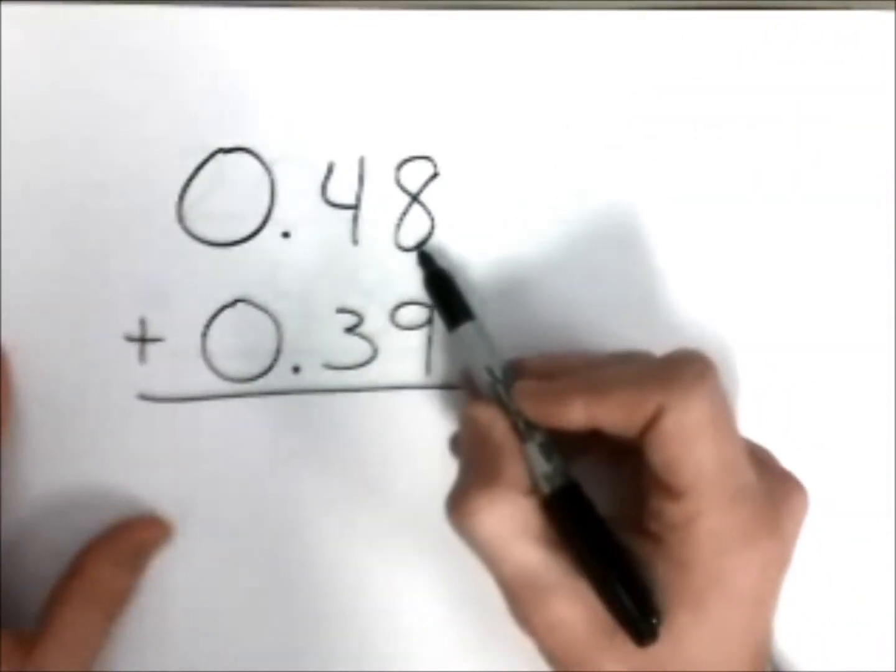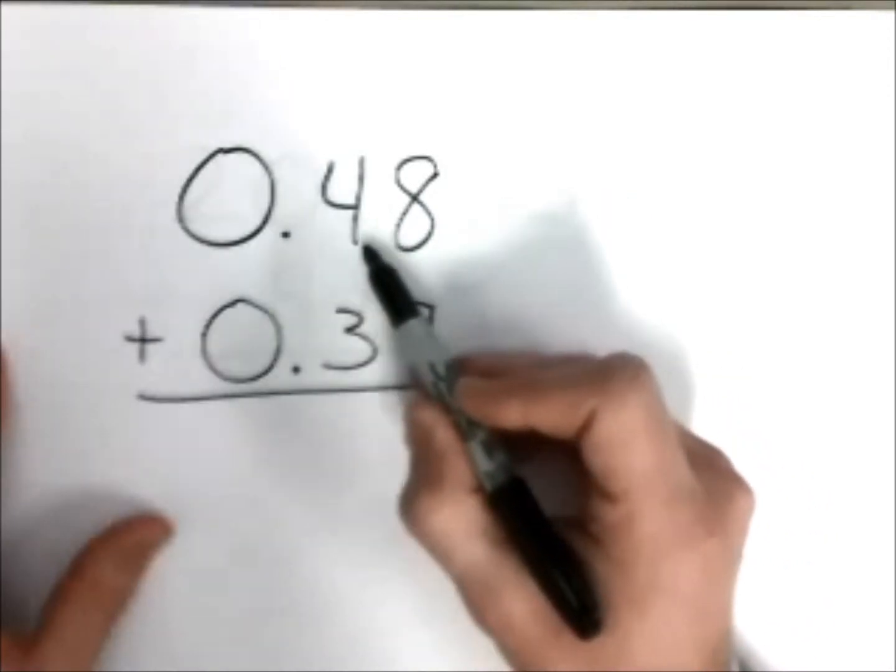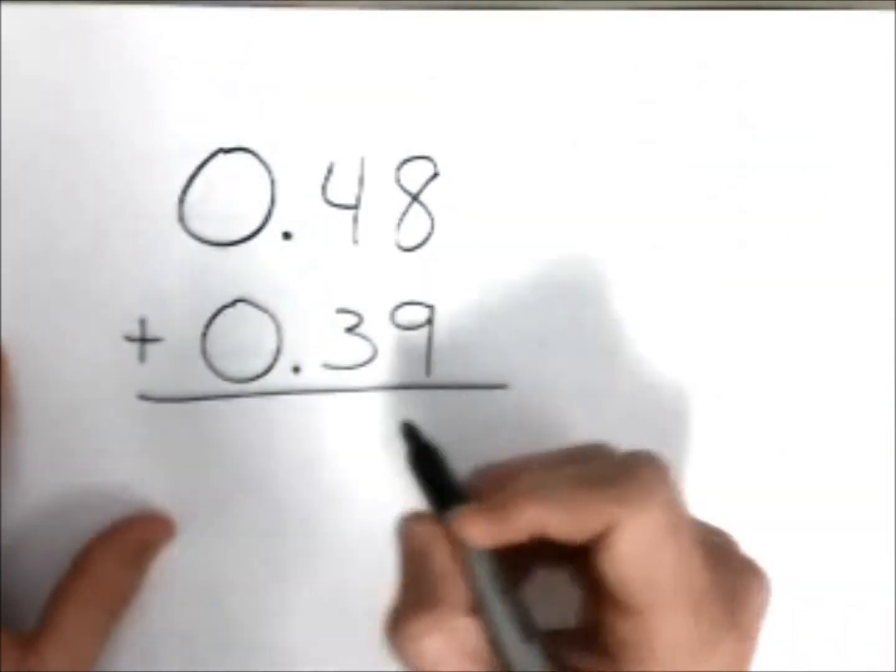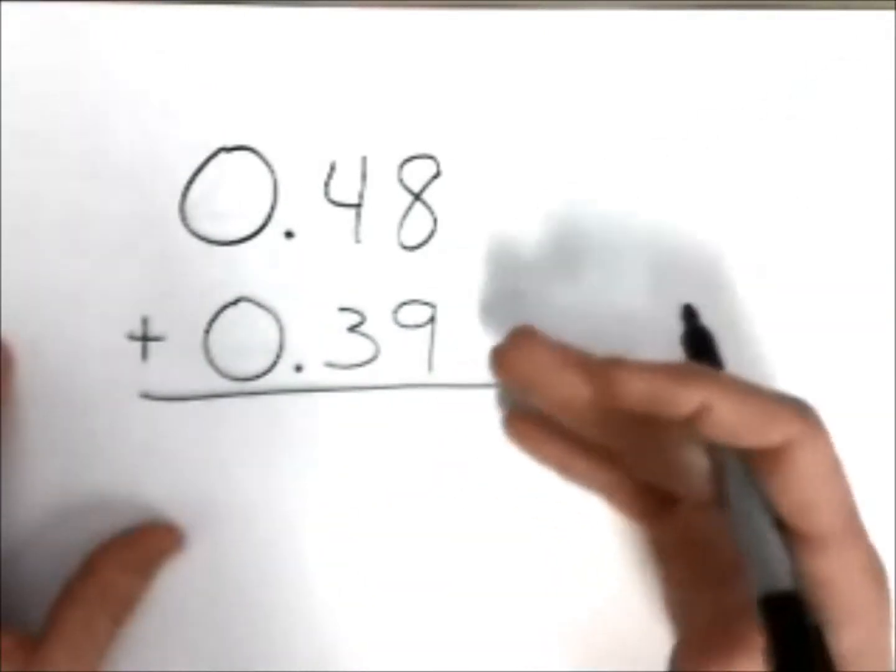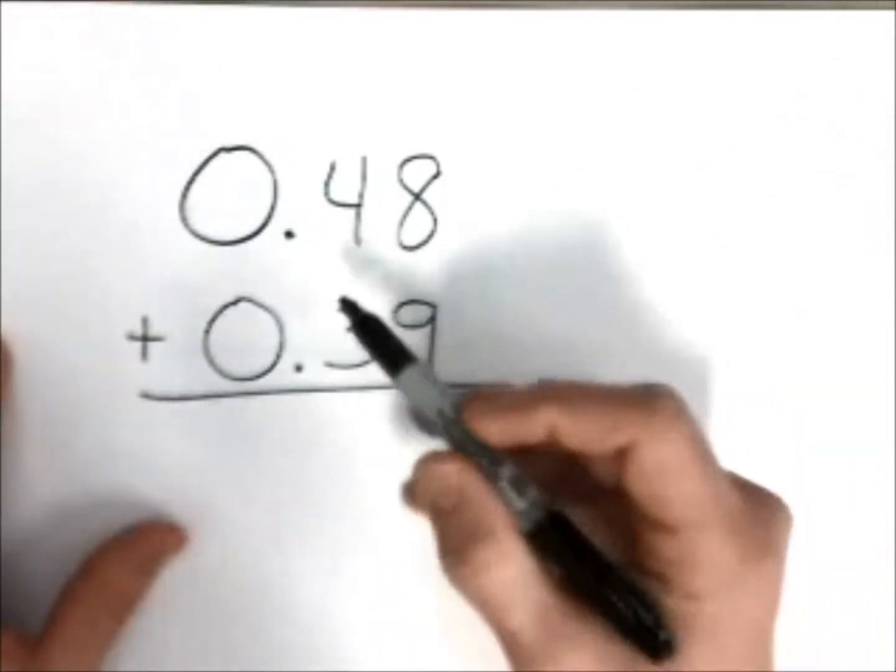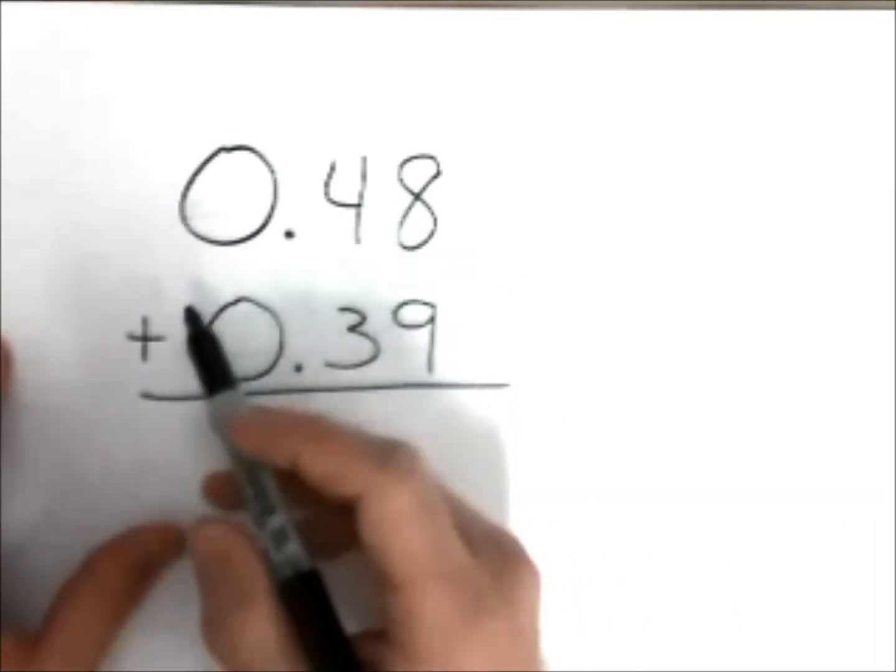We have, as you would say, 48 hundredths, which is two numbers to the right of the decimal point, added to 39 hundredths. And when you look at this you think, basic addition. It's true, I picture it like money, and I'm going to add it up just like money.